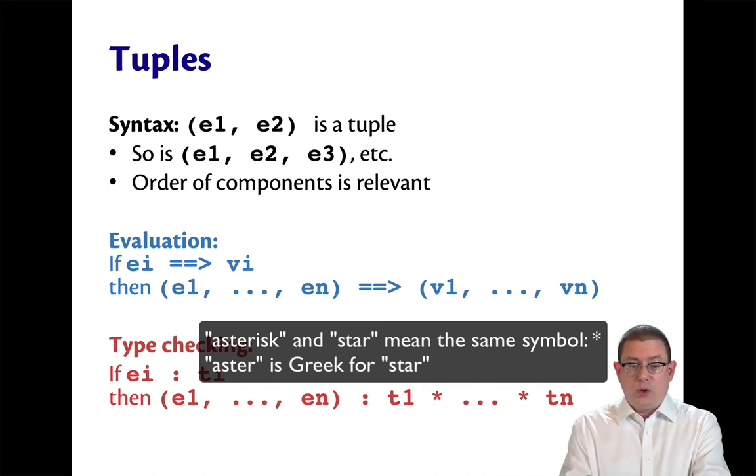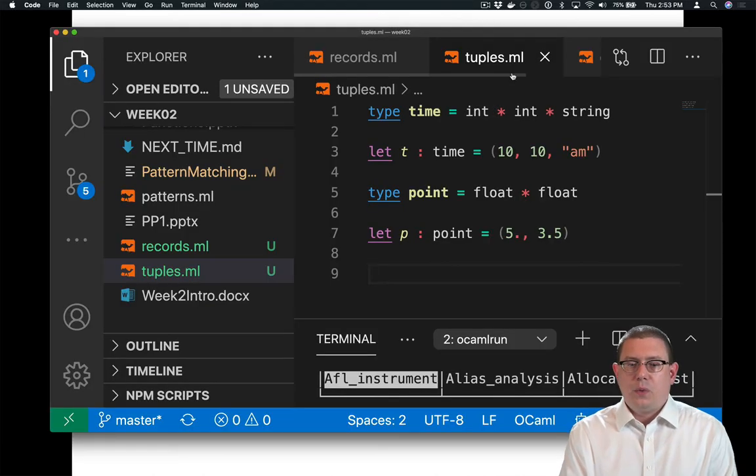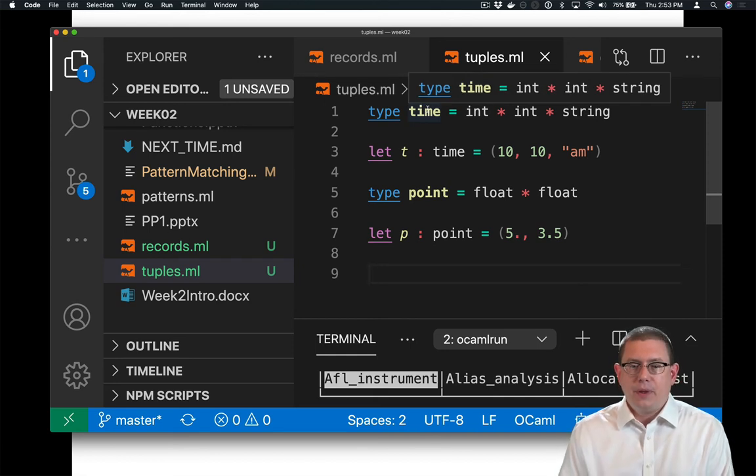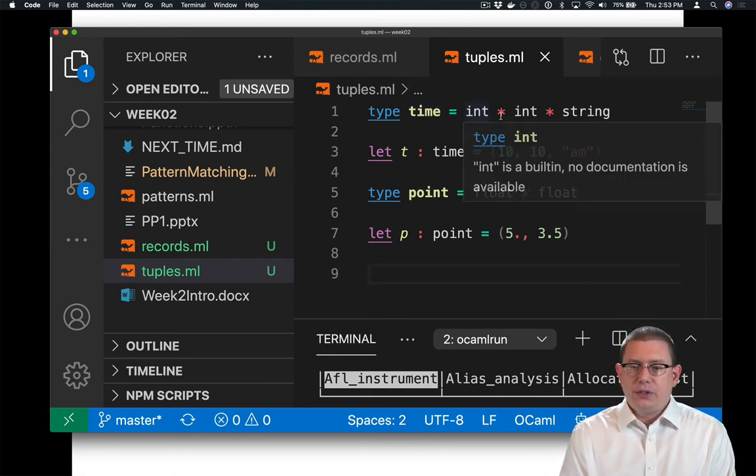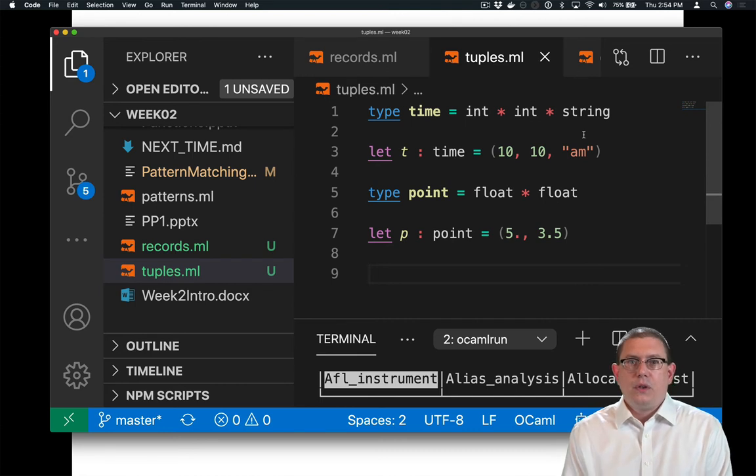Let's go back to our example code and take a look at that. When I wrote the type for time tuples here, I had int * int * string. You can think of that star as separating each component of the tuple - their types.